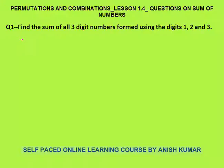Hello, this is permutation and combination lesson 1.4. In this I will discuss questions on sum of numbers. Let's start with a simple example — find the sum of all three digit numbers formed using the digits 1, 2 and 3.